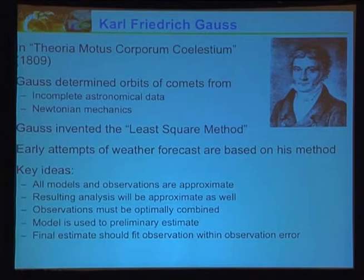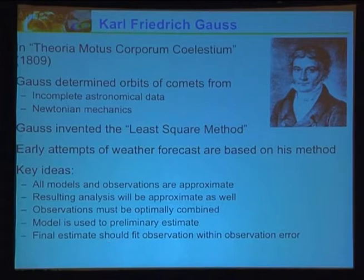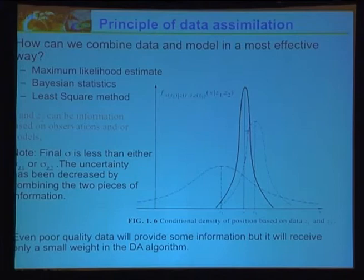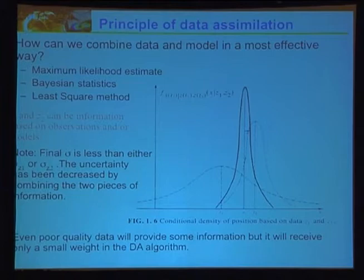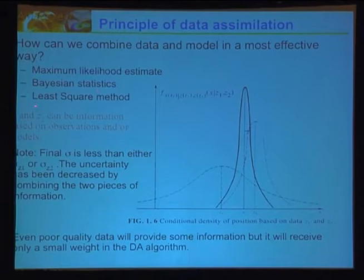Observations and model have to be optimally combined. The model is only used as a preliminary state; the final estimate should fit observations within observational error — you have to be close enough to the observations if you trust them. The principle in data assimilation is an optimal state of the system through information from model and observations. We can use maximum likelihood estimates, Bayesian statistics, and least squares methods.